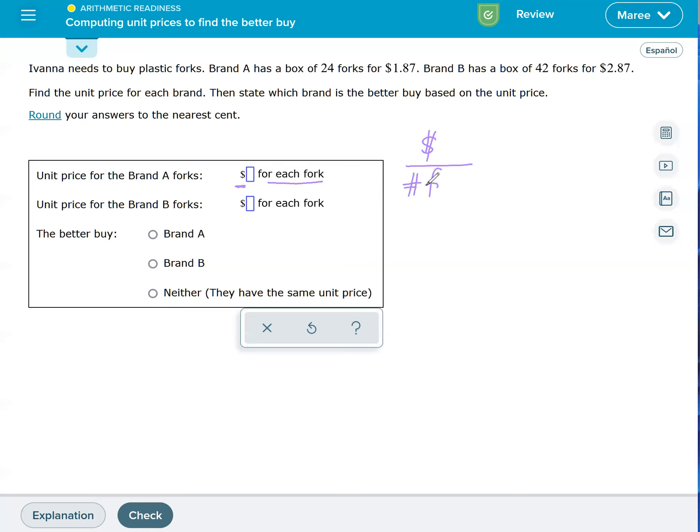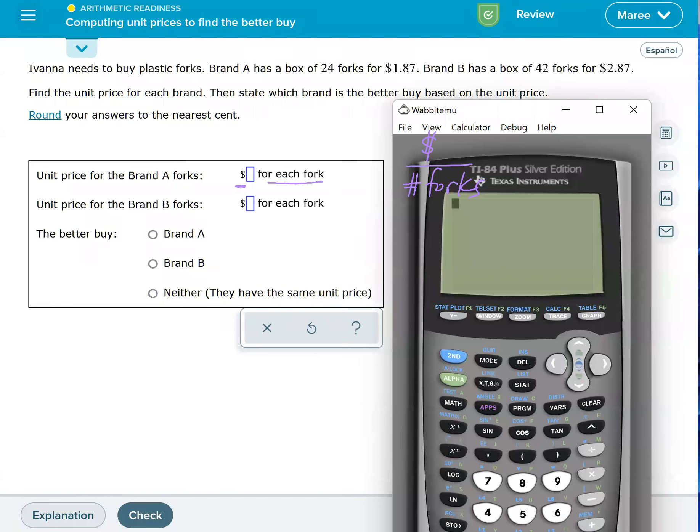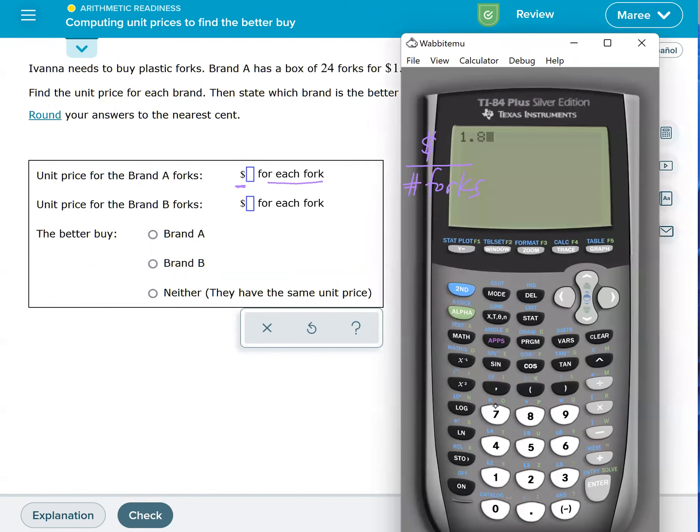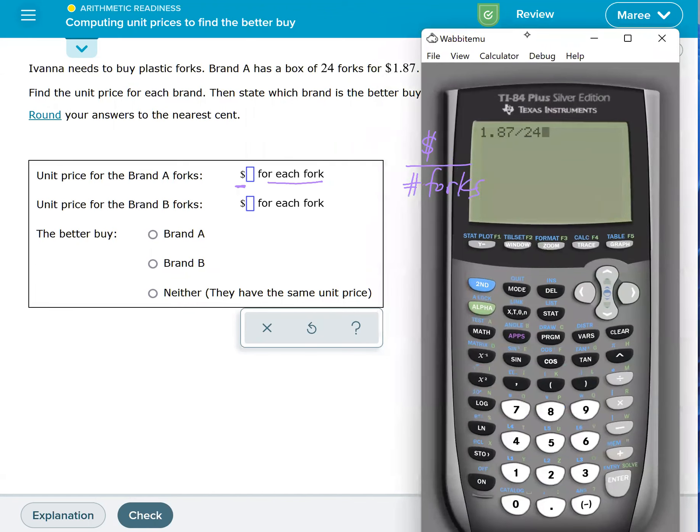by the number of forks. So for Brand A, we're going to take our calculator and do $1.87—we want to do the cost, let's see, $1.87—and we're going to divide it by 24. So Brand A has 24 forks for $1.87. We take how much they cost divided by how many they